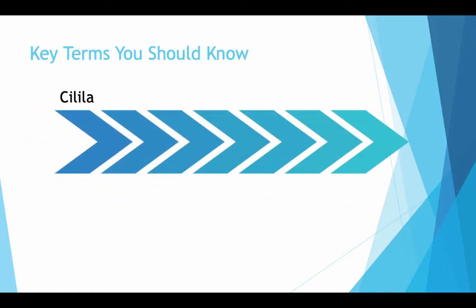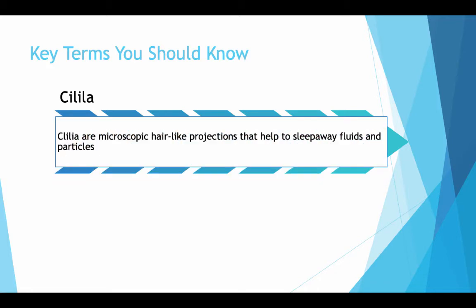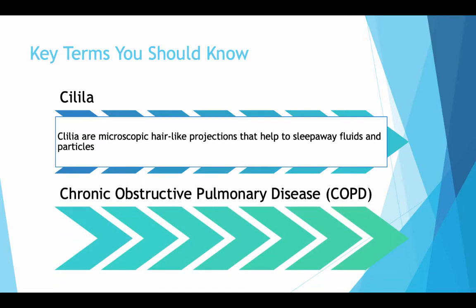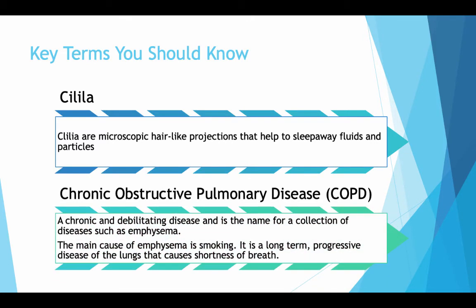Key terms you should know: cilia — microscopic hair-like projections that help to sweep away fluids and particles. Chronic Obstructive Pulmonary Disease, or COPD — a chronic and debilitating disease, named for a collection of diseases such as emphysema. The main cause of emphysema is smoking. It is a long-term progressive disease of the lungs that causes shortness of breath.